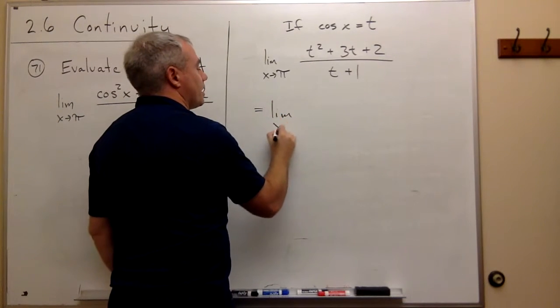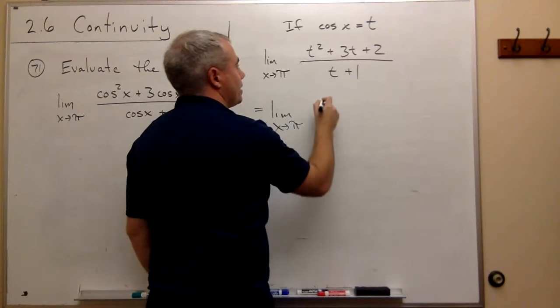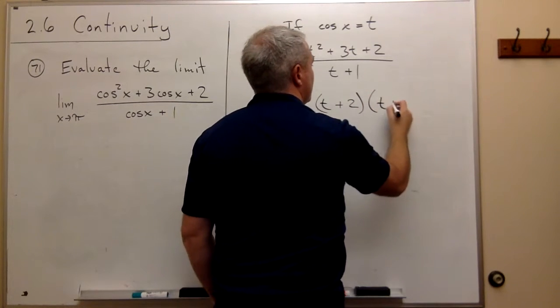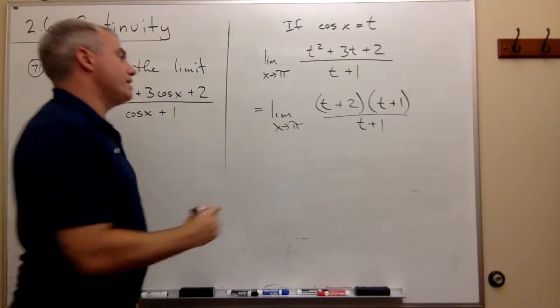So if we factor this, we get the limit as x goes to pi of, if I factor the top, I get t plus 2 times t plus 1 over t plus 1. But remember what t was.